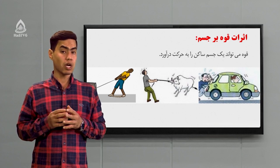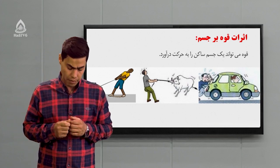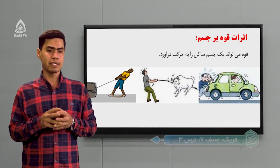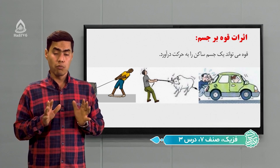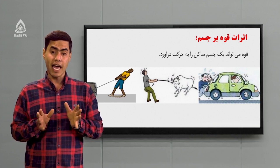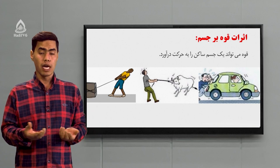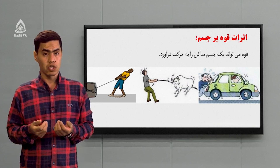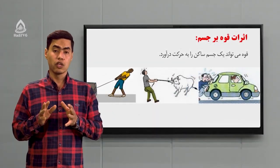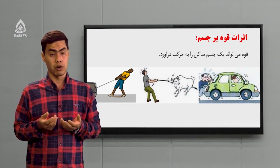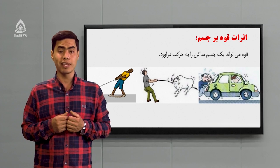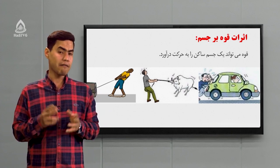می‌خواییم بدانیم که قوه چی تأثیراتی روی جسم می‌تونه داشته باشه. چند تا تأثیر داره، اینها رو دانه‌دانه بررسی می‌کنیم. تأثیر اول: قوه می‌تونه یک جسم ساکن را به حرکت در بیاره. مثلاً وقتی که موتر خاموش می‌شه روی سرک، ما این موتر رو هل می‌کنیم. یا یک جسم داریم و می‌خواییم جابه‌جا کنیم، یک طنابی دور از یک جسم می‌بندیم و جسم را می‌کشیم. با هل کردن یا با کشیدن می‌تونیم جسم را به حرکت در بیاریم.